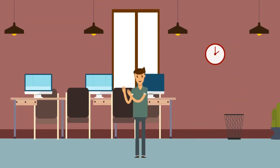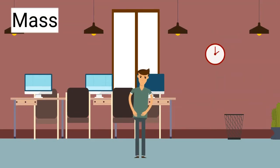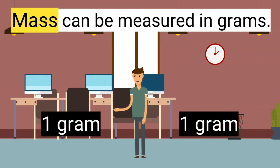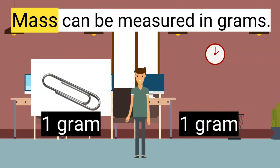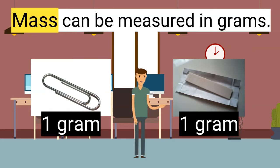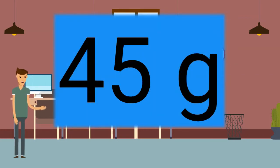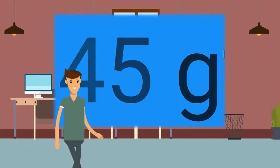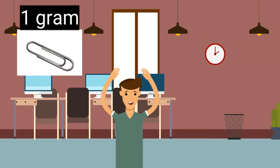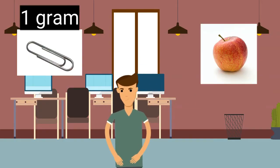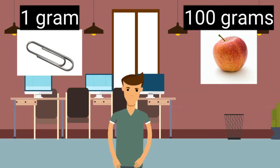Let's first focus on measuring mass. Mass can be measured in grams. One gram is the weight of one paperclip. A piece of gum also weighs about one gram. Grams are shown with an abbreviation of the letter G. This measurement can be read as 45 grams. If one gram weighs the same as a paperclip, we can estimate that an apple probably weighs around 100 grams.